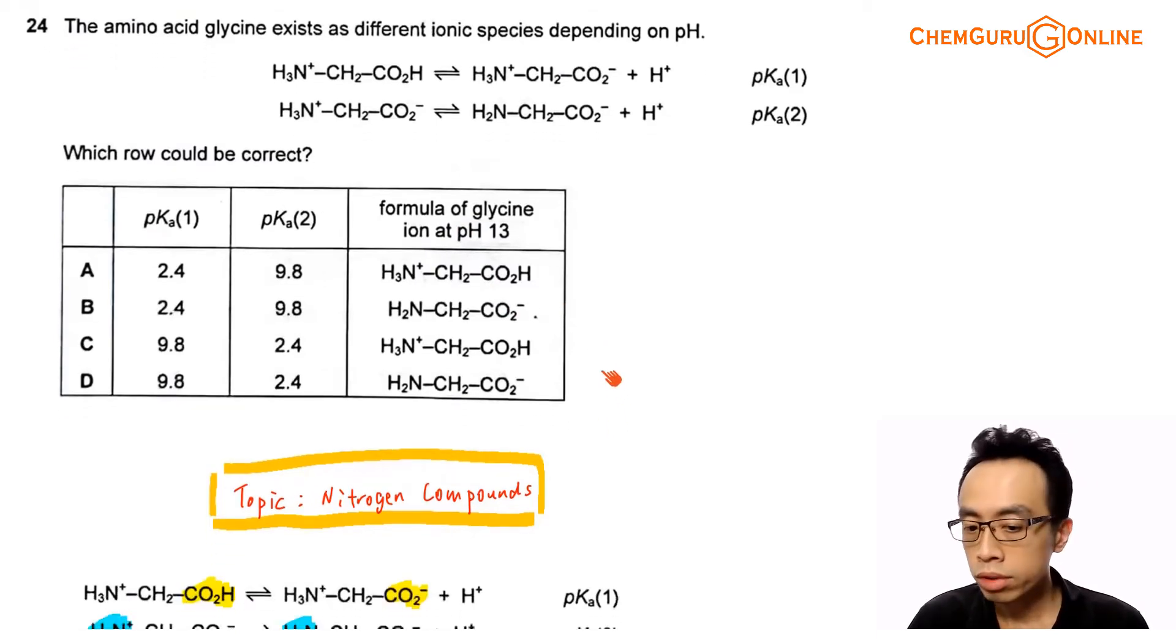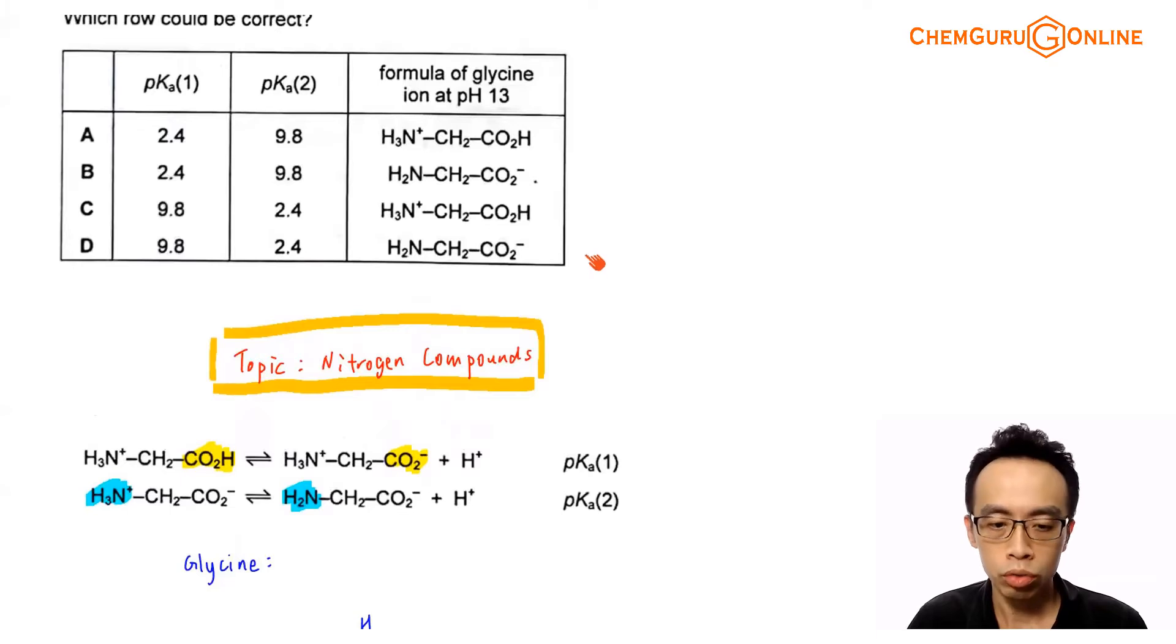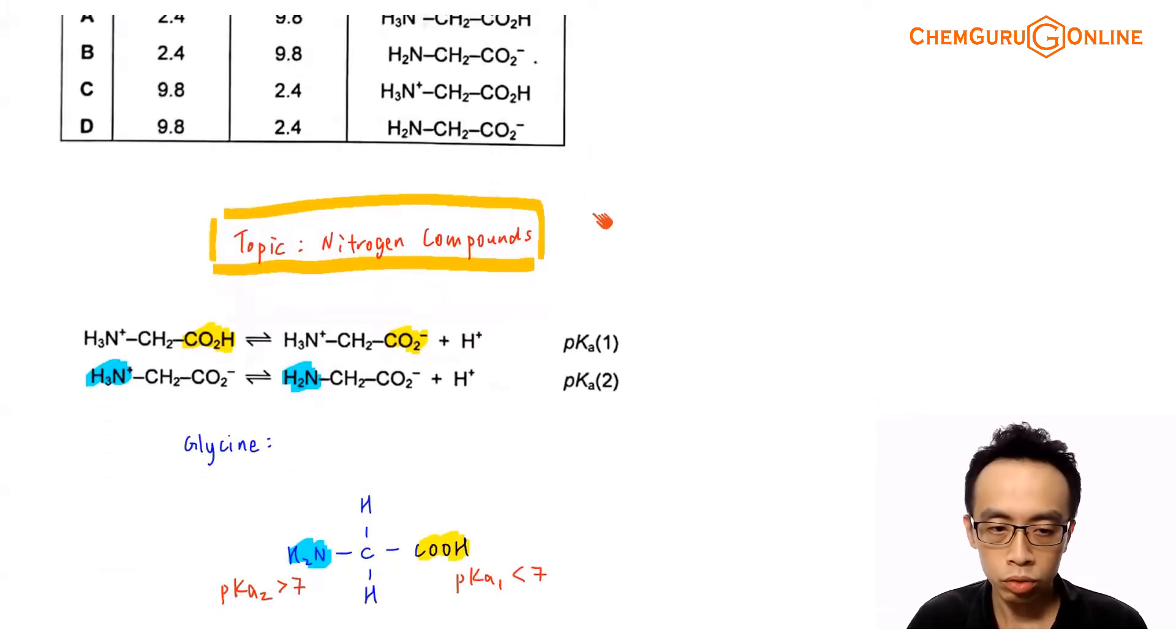Let us take a look at the dissociation involving pKa1 and pKa2. If I look at the first dissociation, it's targeting the amino acid losing its H+ to form conjugate base. Since it is targeting the acid group, pKa1 should be associated to the pKa value for your alpha acid functional group.